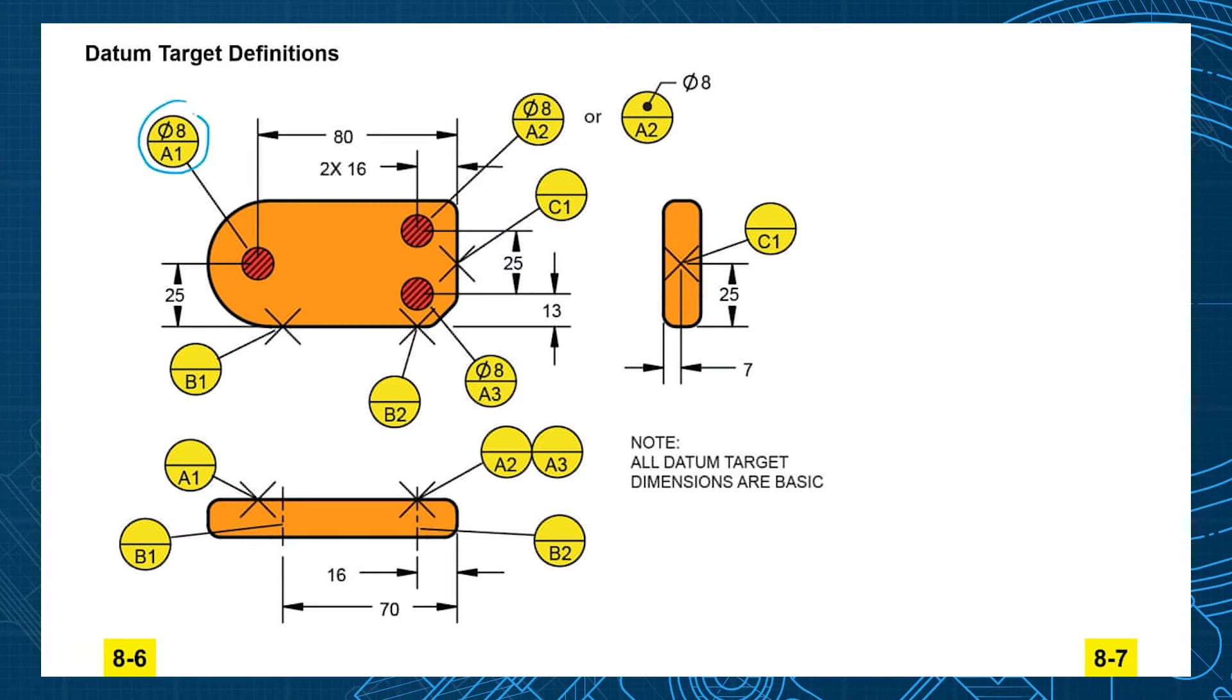A datum target is a circle cut in half. The lower half of the target is where you put the datum letter and the target number. So this would be A1 target, and if the target has size then you put the shape and the size of the target in the upper part of it.